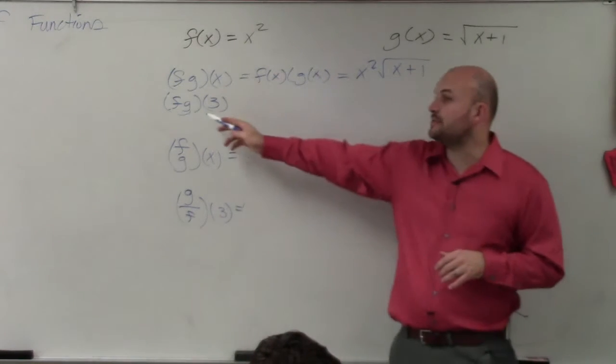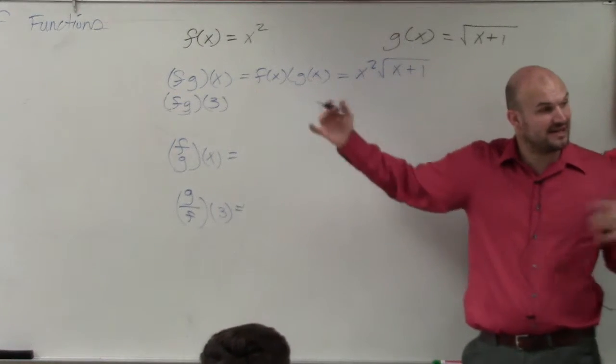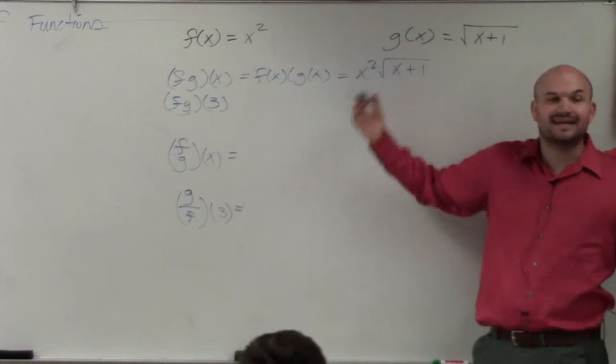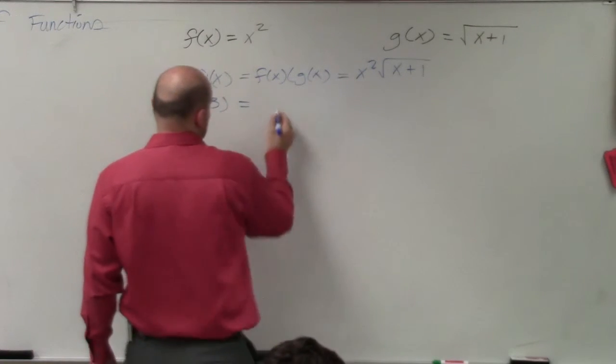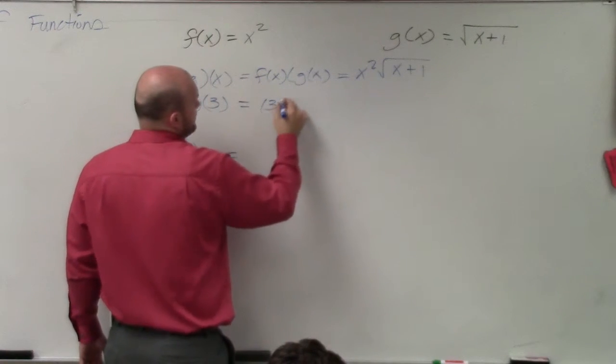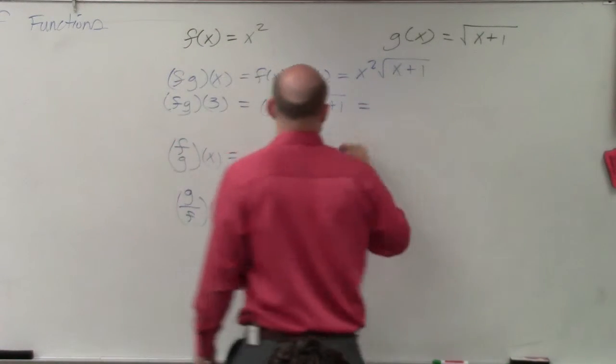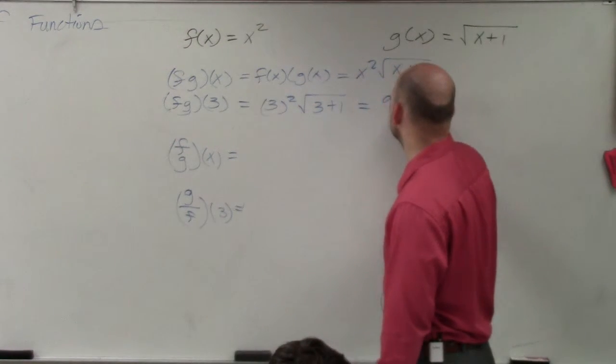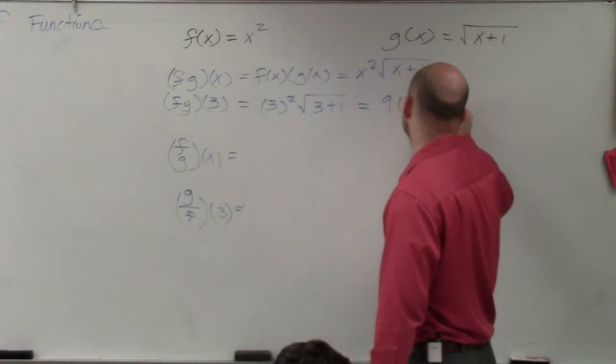However, what if I wanted to evaluate for the product and evaluate that for 3? So basically, what you do is you find the product and then evaluate for 3. So this would be 3 squared times the square root of 3 plus 1. Well, 3 squared is 9 times the square root of 3 plus 1 is the square root of 4, times 2, which equals 18.